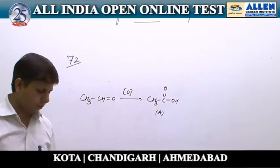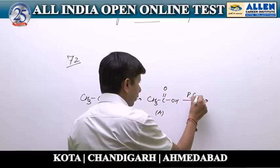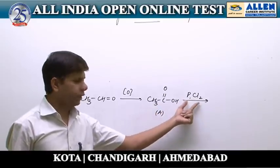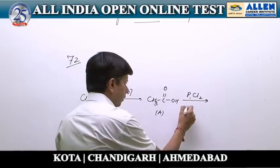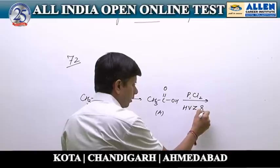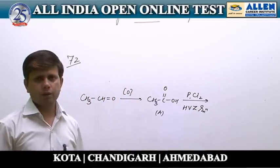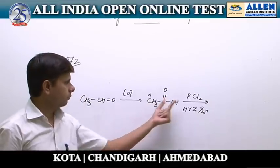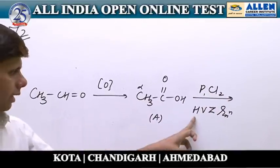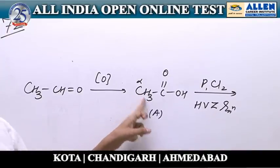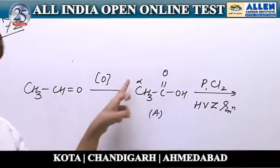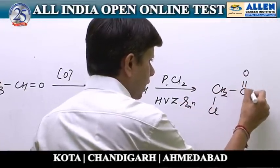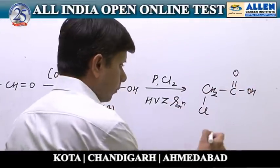Acetic acid is to be further reacted with phosphorus and chlorine. The reaction of acetic acid with chlorine and phosphorus is the HVZ reaction. This reaction involves substitution of a hydrogen atom from the alpha carbon by chlorine. So in the HVZ reaction, the alpha hydrogen atom from the acid will be replaced by chlorine to give a chloro-substituted product as compound B.